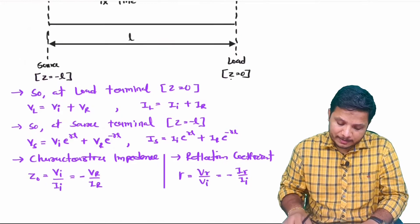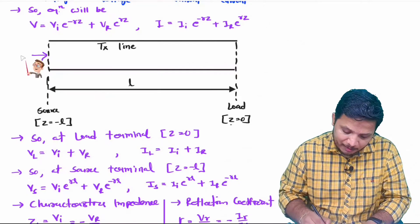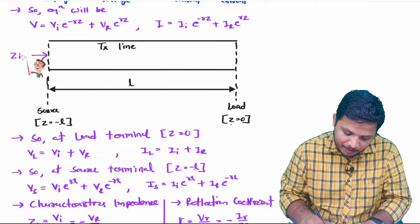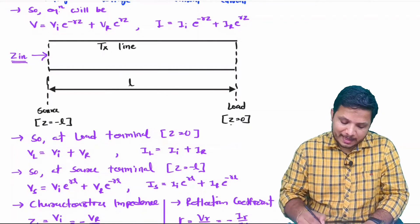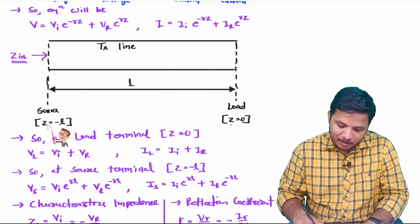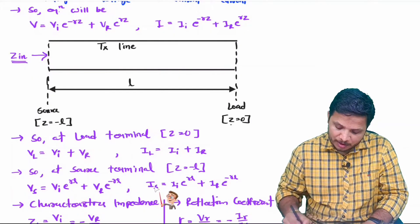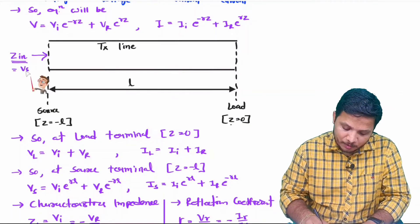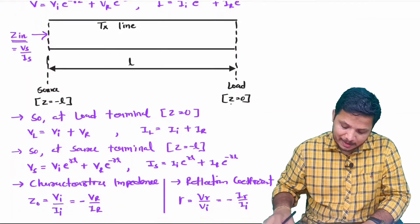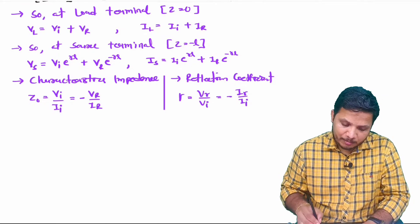To find the input impedance, we look from the source side. At the input impedance Zin, we use z equals minus L, giving us the source voltage and source current. So Zin equals source voltage Vs divided by source current Is, and these two equations will be used to derive the input impedance.